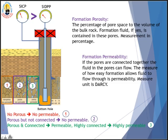Now we come to formation permeability. In formation number one, there is no pore space between the rock. In number two, there are pore spaces but they are not connected together. In number three, the pore spaces are all connected, so the fluid in the pores can flow. The measure of how easily a formation allows fluid to flow through is called permeability, with measurement unit in Darcy.